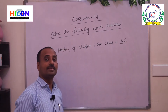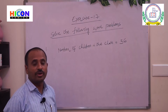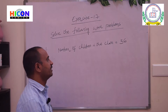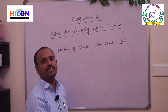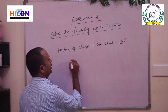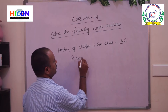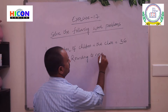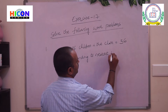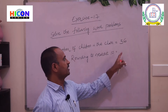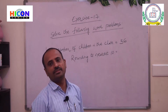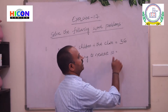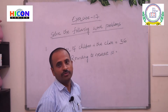There are 36 children in your class and you have to round this 36 to the nearest ten. So, rounding to the nearest ten — what will you get if you round 36 to the nearest ten?